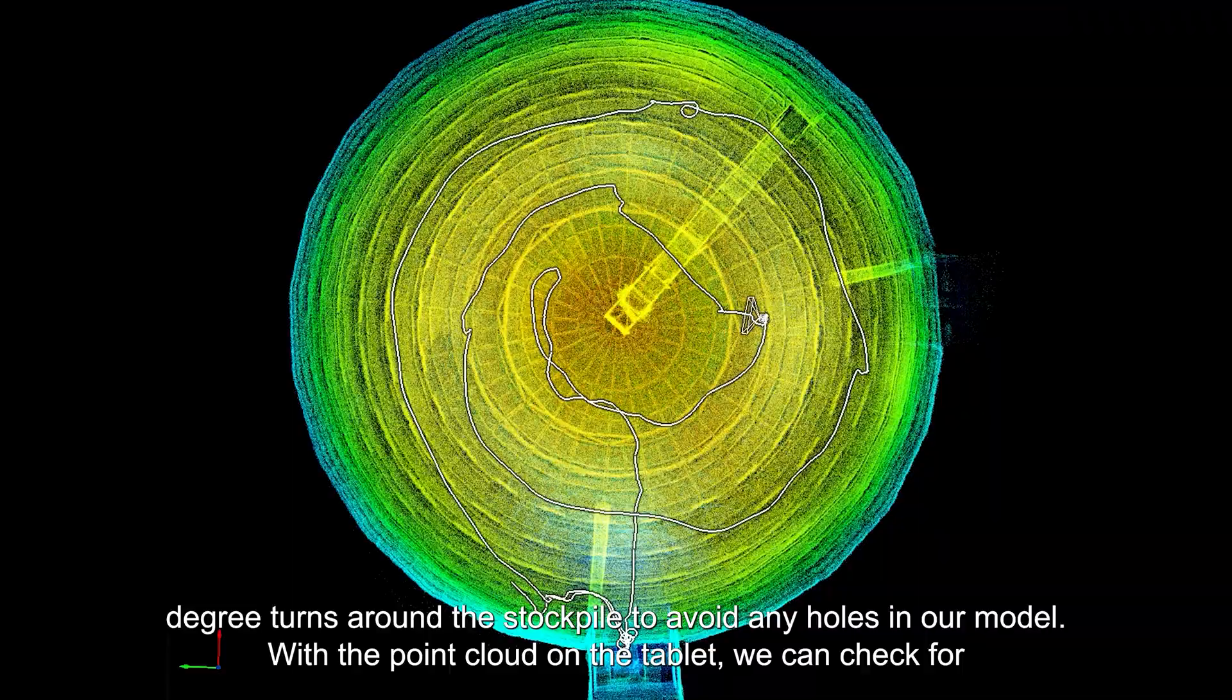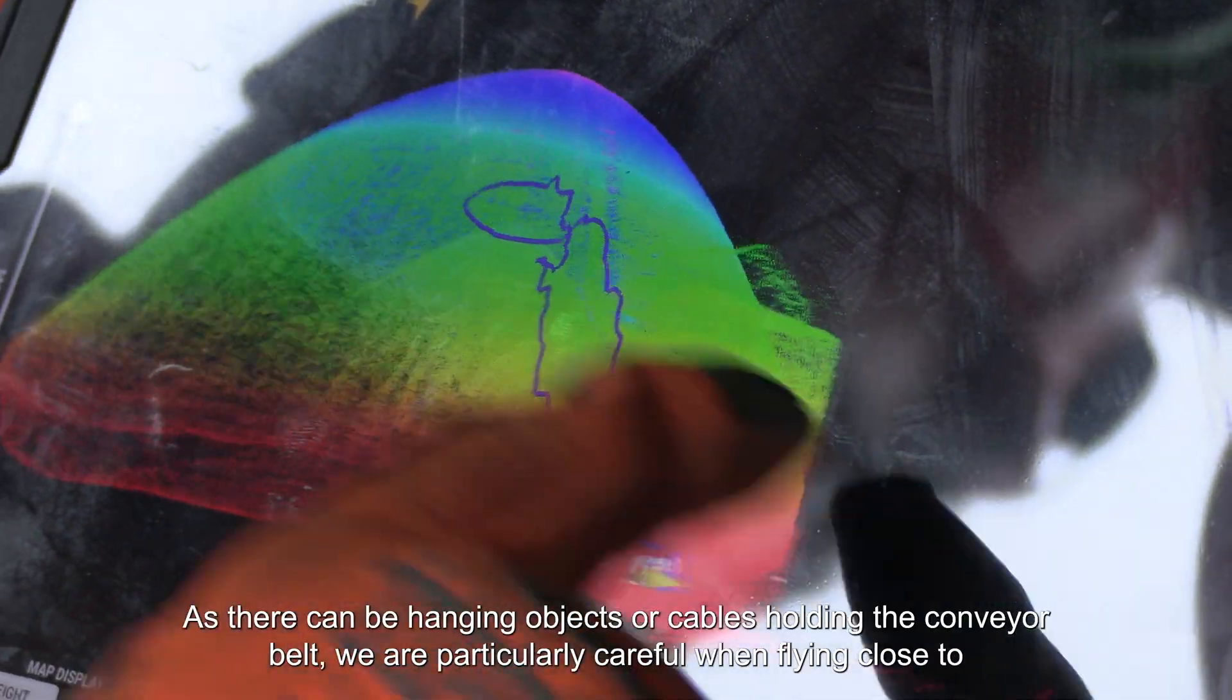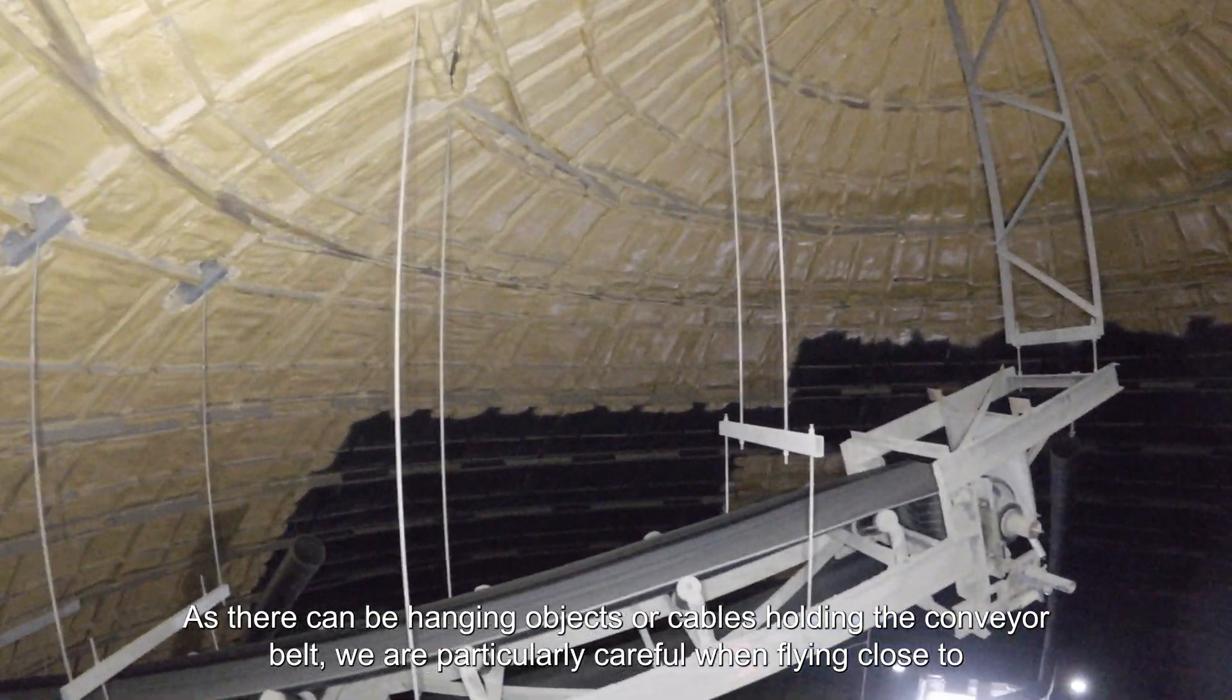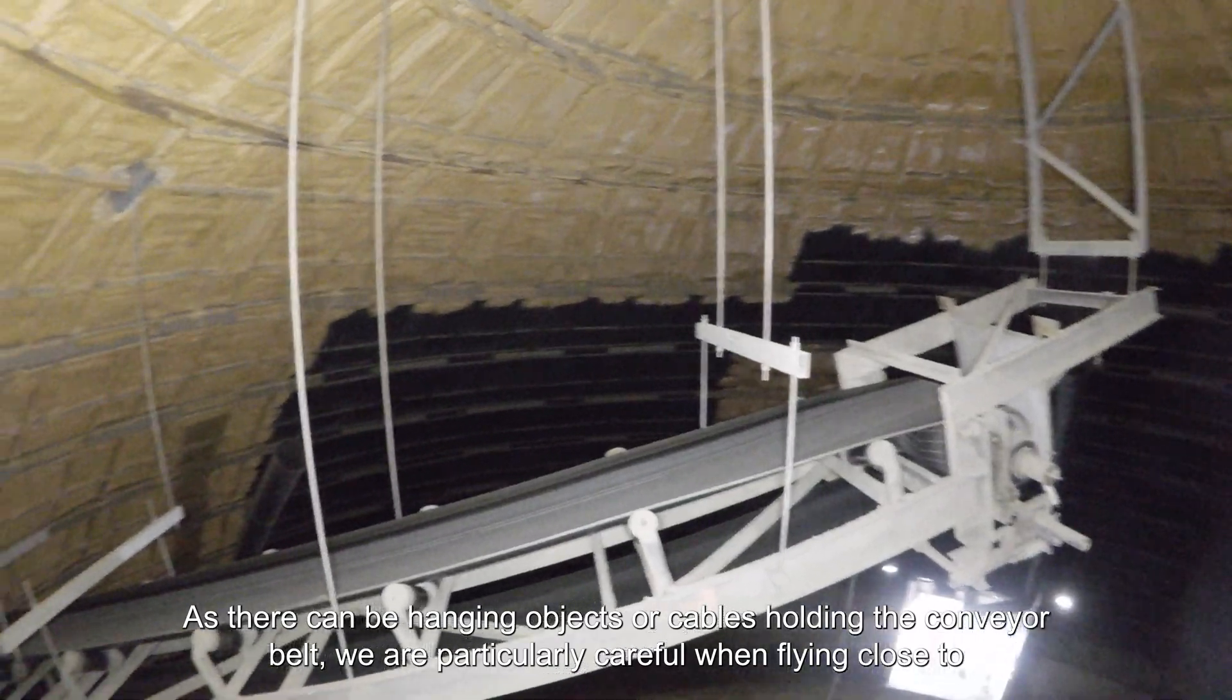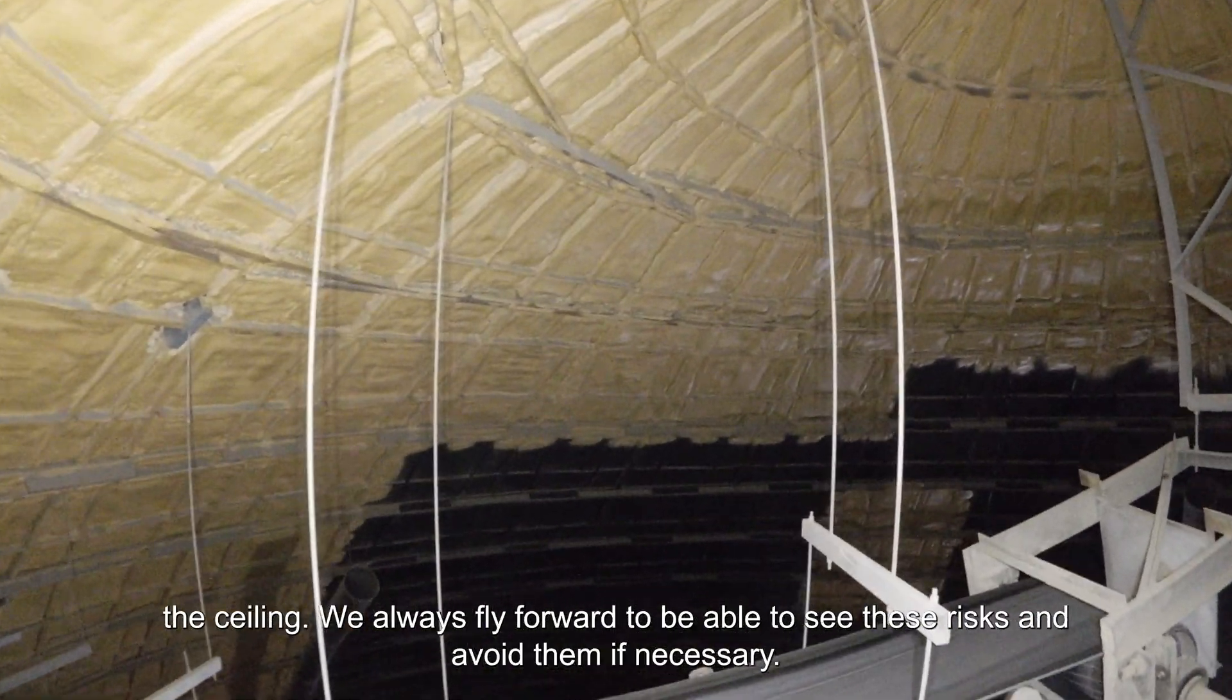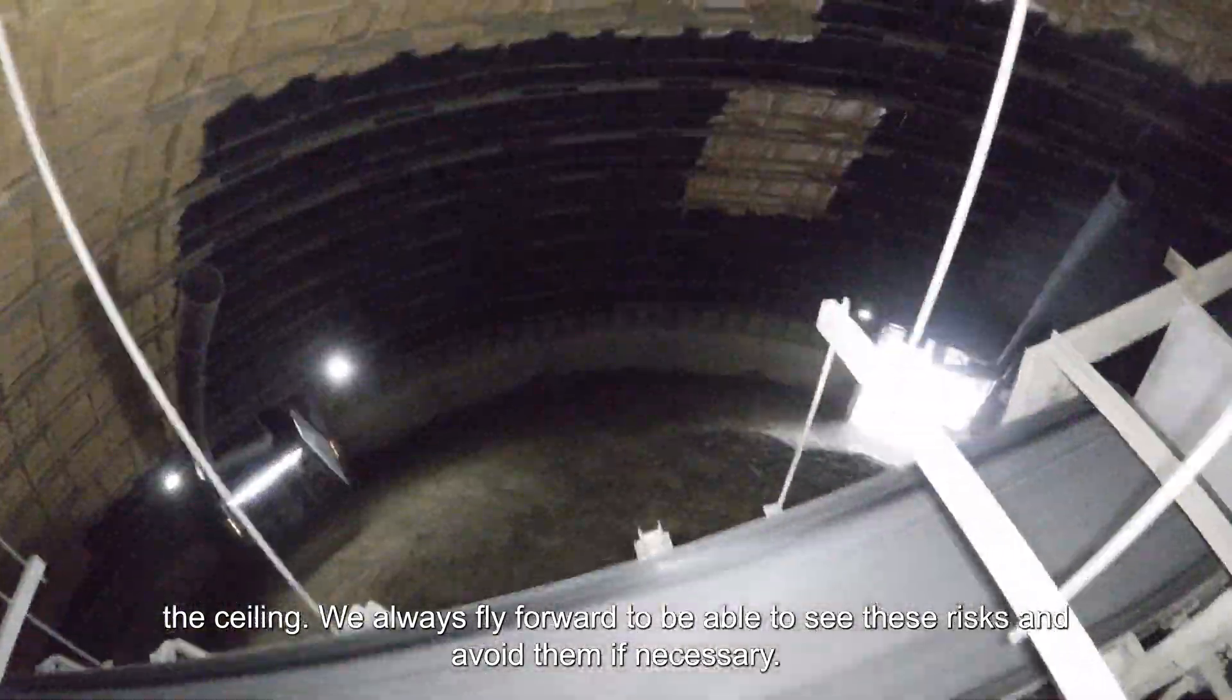With the point cloud on the tablet, we can check for any holes in the model during the flight. As there can be hanging objects or cables holding the conveyor belt, we are particularly careful when flying close to the ceiling. We always fly forward to be able to see these risks and avoid them if necessary.